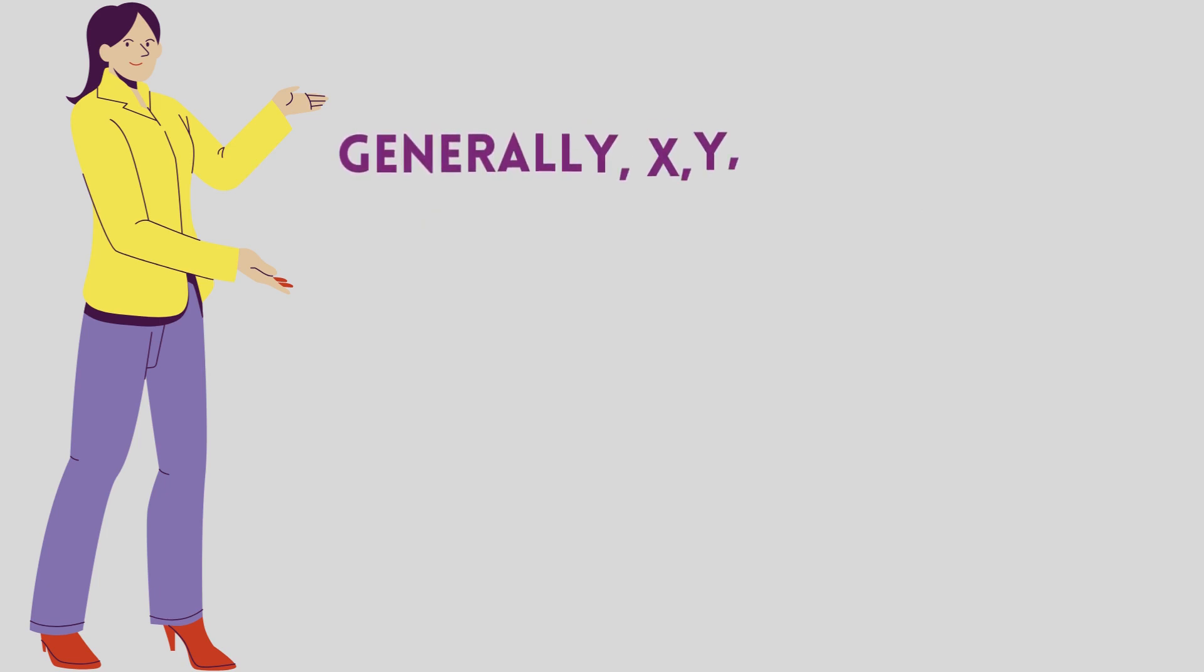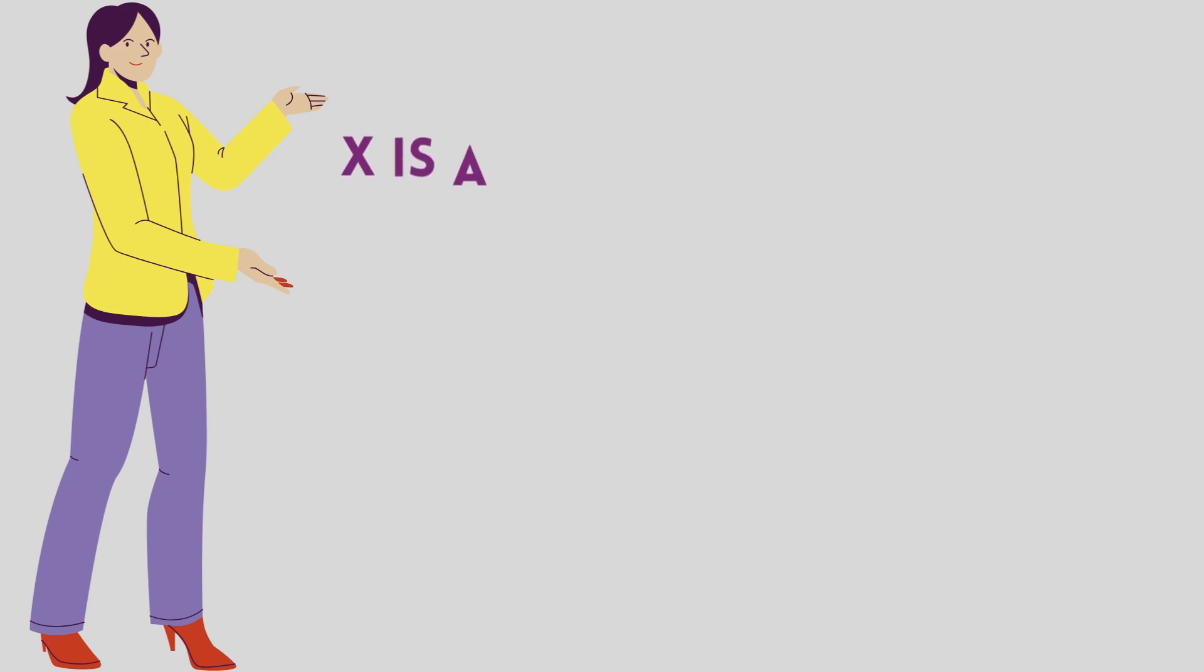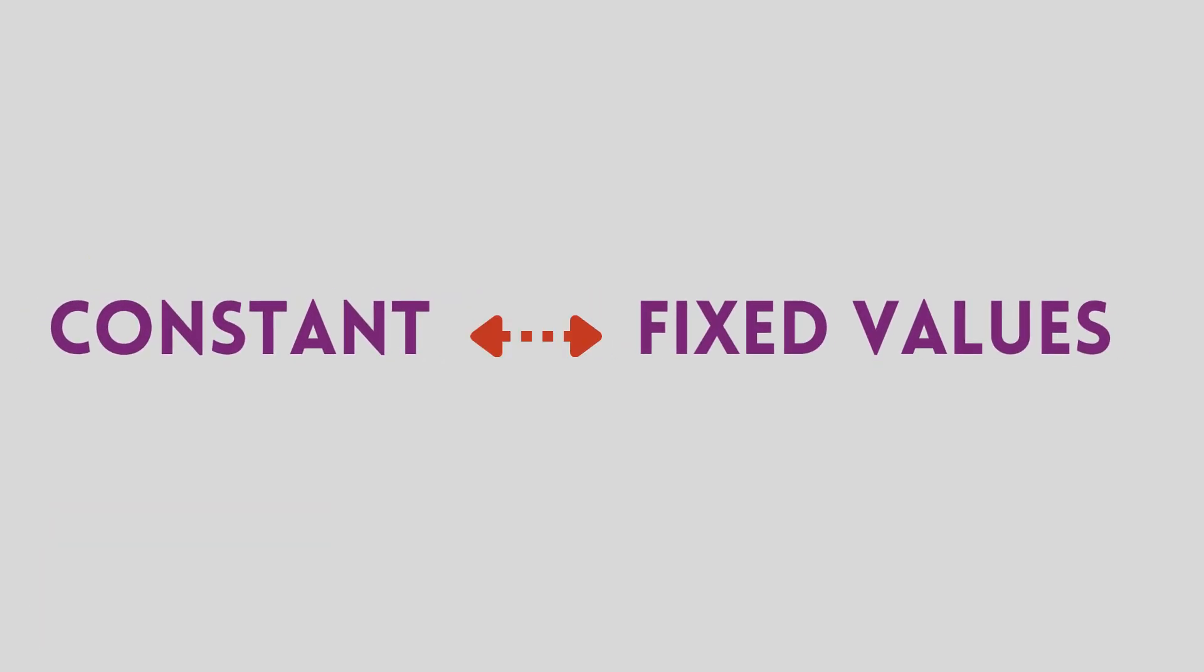We use x as an alternate to represent a value that we do not know. In contrast, there are some values in equations which remain constant and do not change ever. For example, consider a number 25.